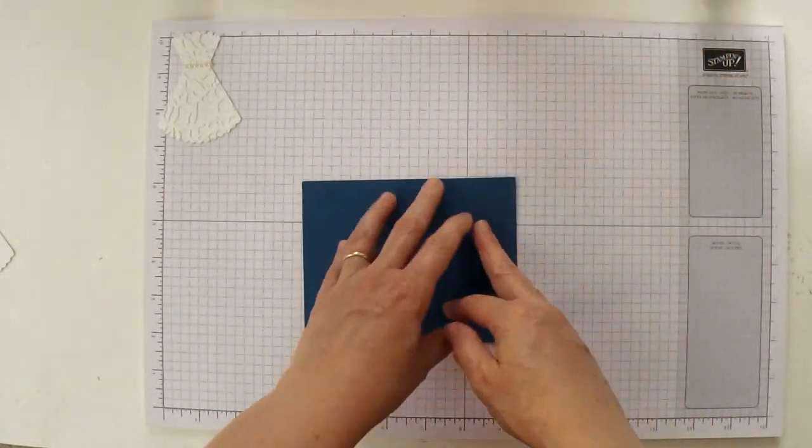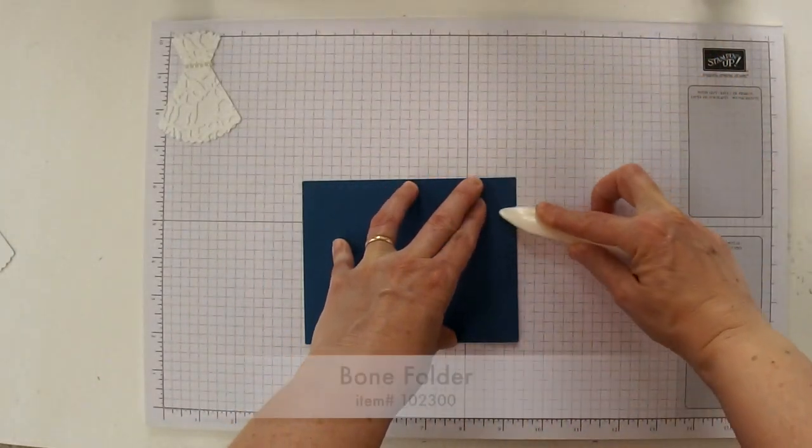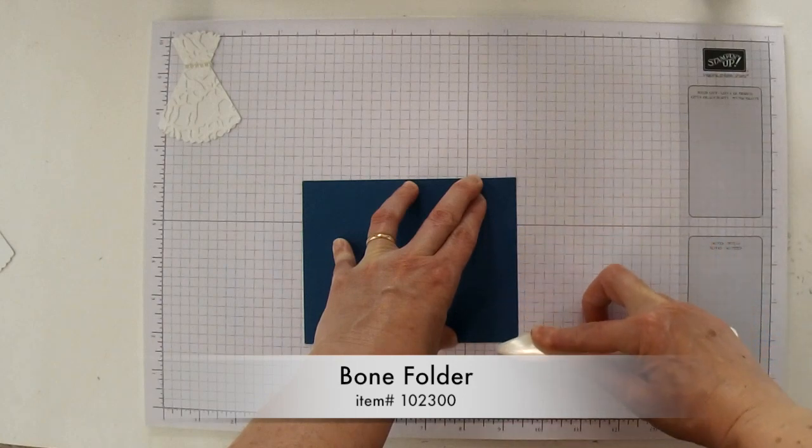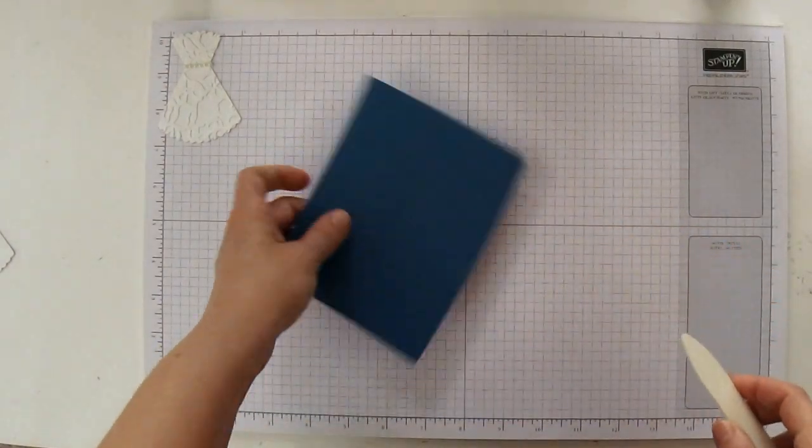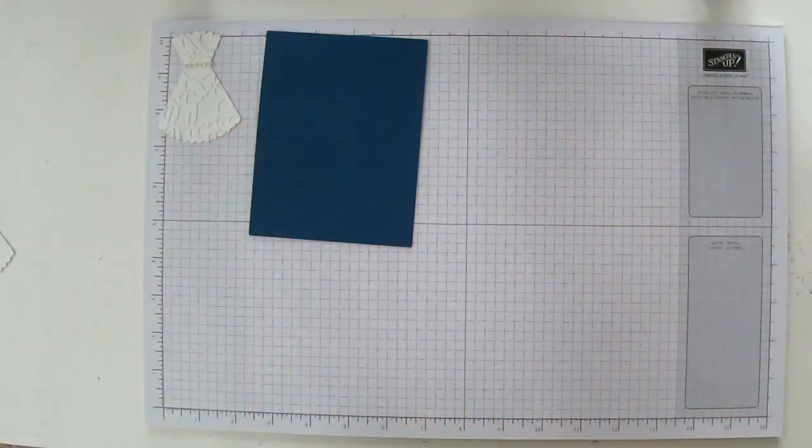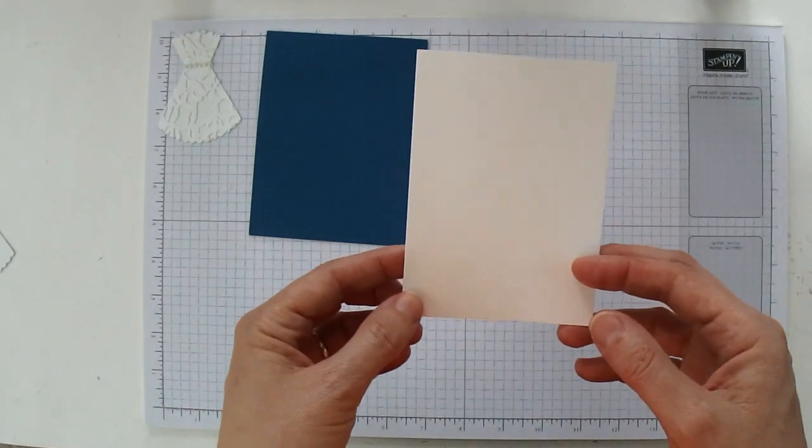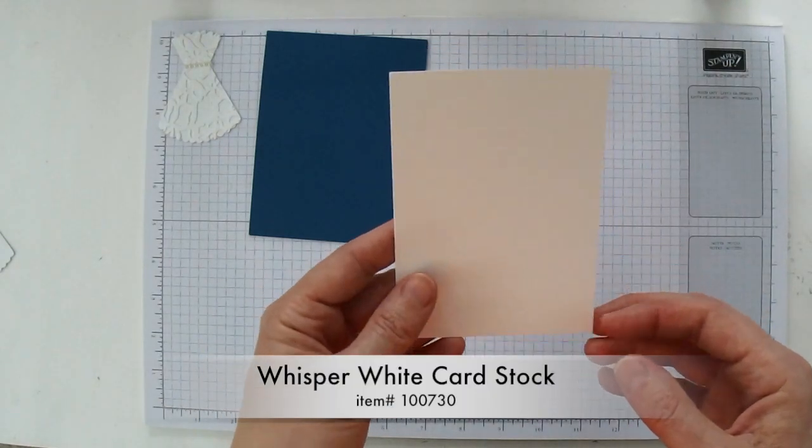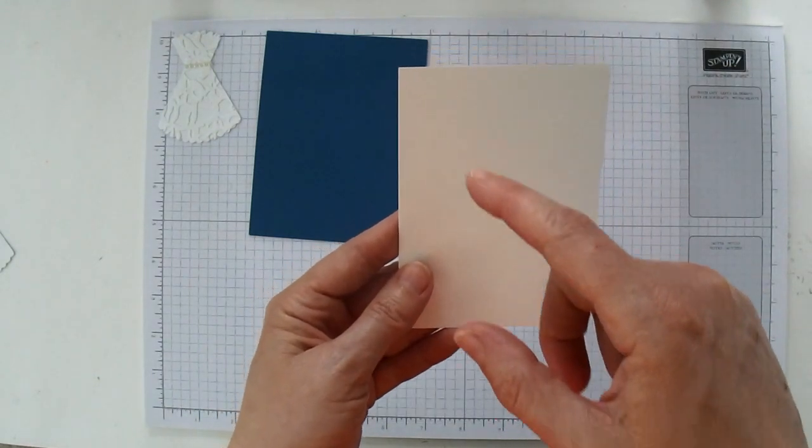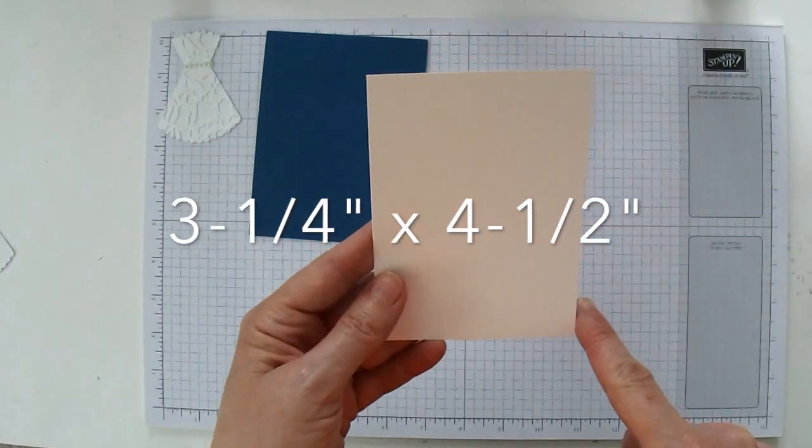So then I'm just going to fold it in half along the score line and take my bone folder and smooth down that fold. Set that aside. Then you're going to need a piece of Whisper White for your focal point, and I have cut this piece to three and a quarter inches by four and a half inches.